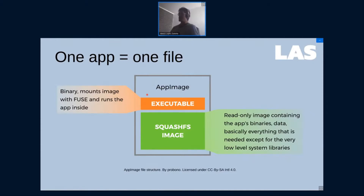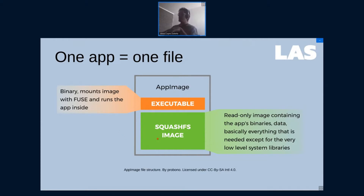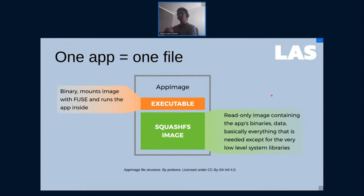An AppImage has this structure: it's a main executable and a compressed directory. This executable will mount the directory using FUSE and run it. Inside this, the payload as we call it is a read-only image containing the app binaries and all the other resources that it might require to run.